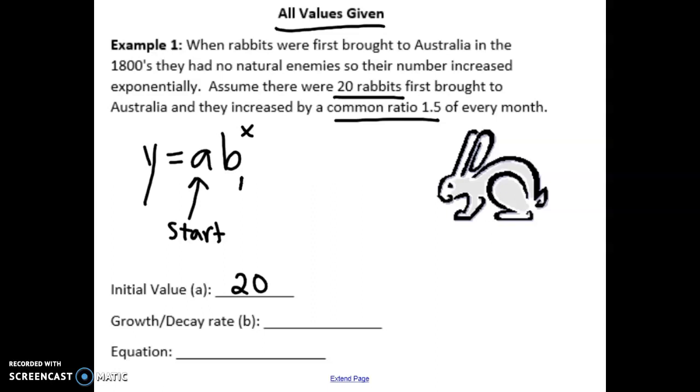And the B value is our rate, either our growth rate or our decay rate. In this case, it would be the 1.5, and remember guys that if B is bigger than 1, then it's a growth. So in this case, it's not a decay rate, it's a growth rate, which we should have known already, because it says that the rabbit population is increasing.